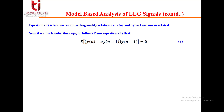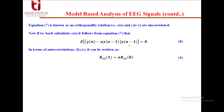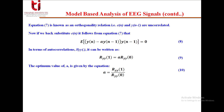Back-substituting e(n), we get the equation E[(y(n) - a·y(n-1))·y(n-1)] = 0. Writing in terms of autocorrelation, we have R_yy(1) = a·R_yy(0). So the optimum value of a can be calculated as R_yy(1) divided by R_yy(0), that is the autocorrelation at time lag 1 divided by the autocorrelation at time lag 0.